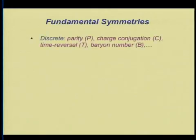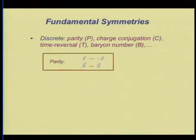Let me remind you what fundamental symmetries are. There are two classes: the discrete symmetries — parity, charge conjugation, time reversal, baryon number, and so on. Parity, for example, is a transformation that inverts the coordinates through the origin; under that transformation, spins don't change sign, but ordinary vectors do.